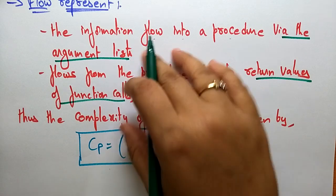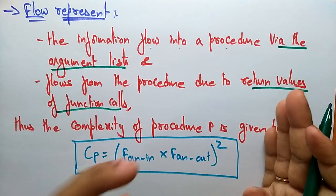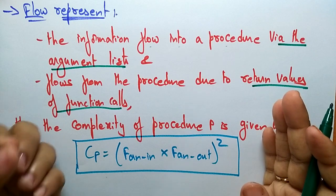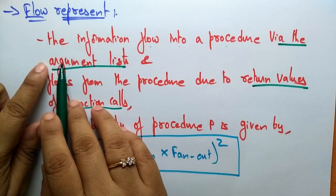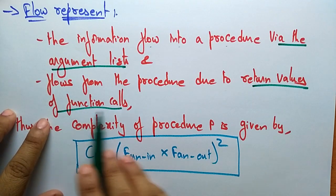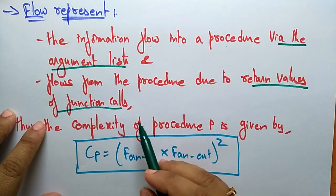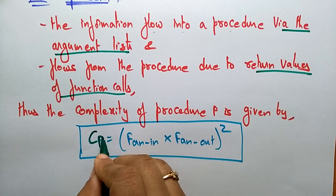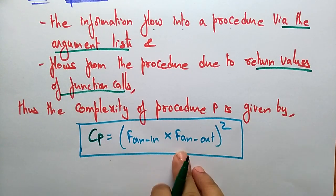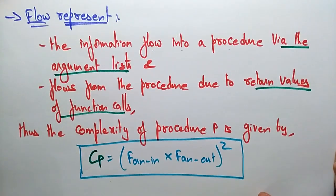If you want to execute, you return the value — that is the function call representing the output, or fan-out. So the flow representation is: into the processor via the argument list, and from the processor via the return values of function calls. The complexity of a procedure CP is calculated as: CP = fan-in × (fan-out)². This is the formula for calculating the complexity of a procedure.